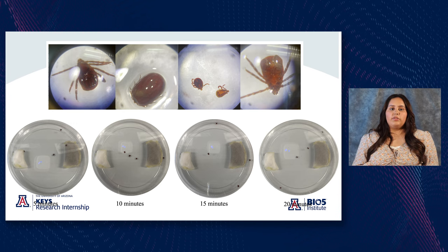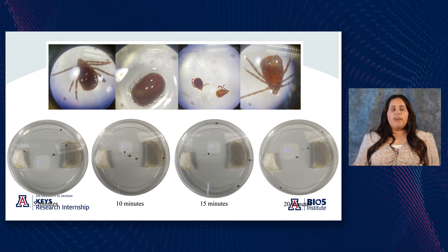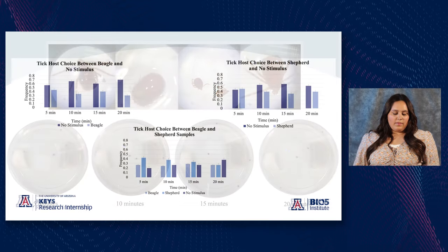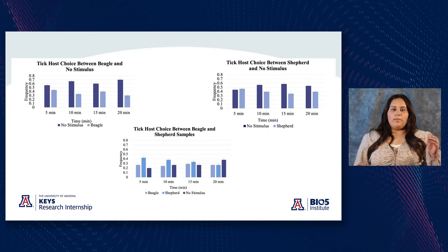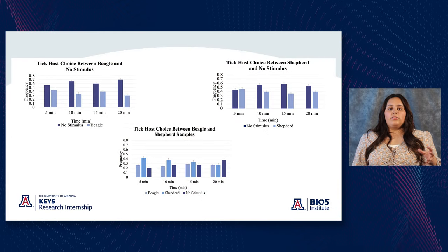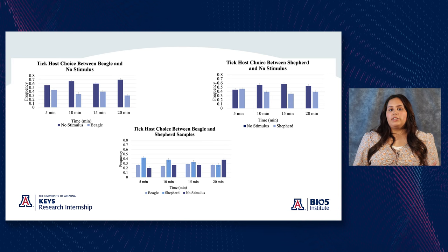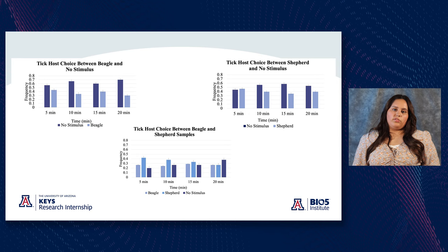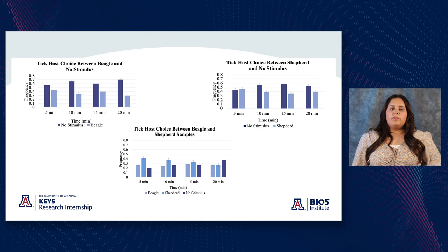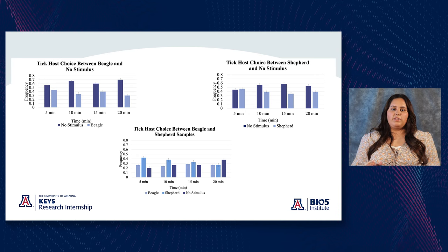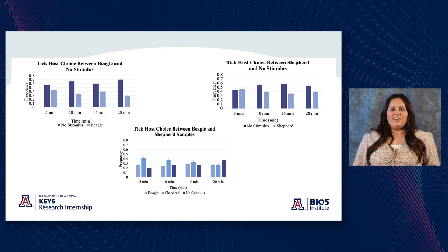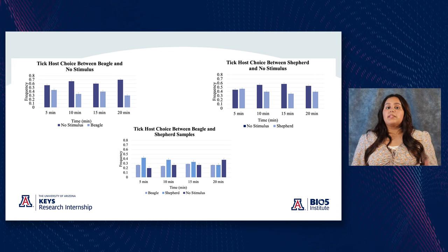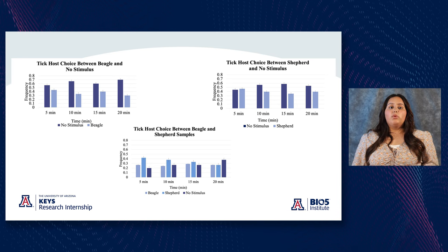We ran trials using petri dishes, placing ticks inside with two hair samples, and tracked every five minutes over 20-minute trials to see where the ticks were at all times. Shepherds at all time points showed attraction towards the shepherd hair sample. In contrast, only two time points showed any tick attraction towards the beagle sample. When we conducted a choice host test with both samples, we found that ticks have no significant preference towards either, with maybe a slight tendency towards shepherd but nothing that would matter in the wild.